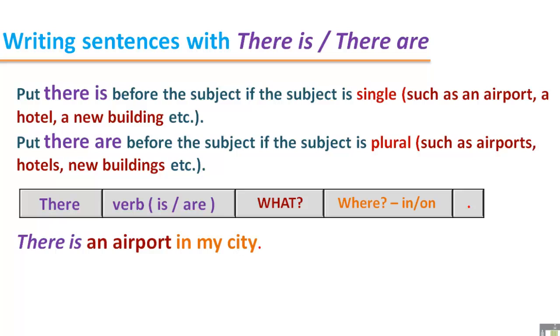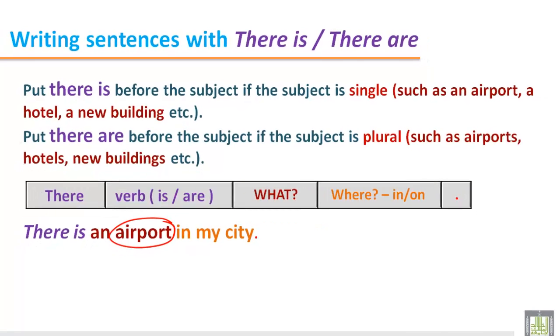This example says there is an airport in my city. The word airport is a singular noun, so the sentence begins with there is. We put is after there. And where is the airport? The answer says it is in my city.